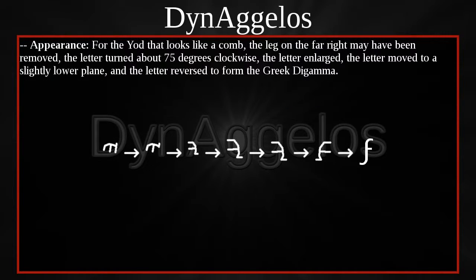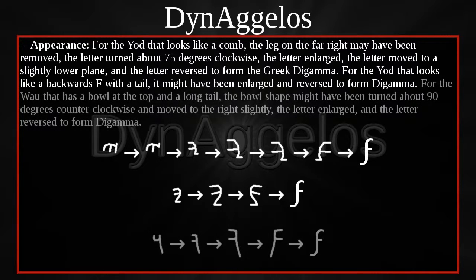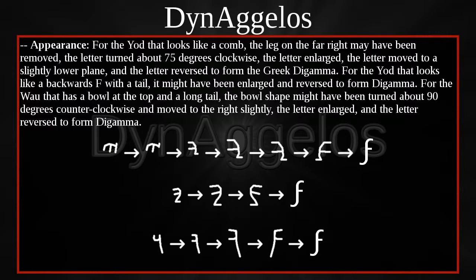For the YOD that looks like a comb, the leg on the far right may have been removed, the letter turned about 75 degrees clockwise, enlarged, moved to a slightly lower plane, and reversed to form the Greek DIGAMMA. For the YOD that looks like a backwards F with a tail, it might have been enlarged and reversed to form DIGAMMA. For the WAU that has a bowl at the top and a long tail, the bowl shape might have been turned about 90 degrees counterclockwise, moved to the right slightly, the letter enlarged, and reversed to form DIGAMMA.